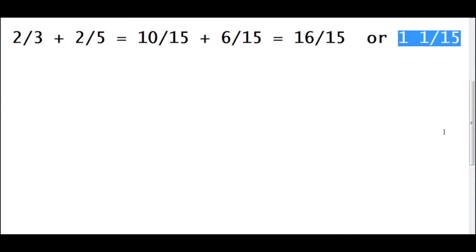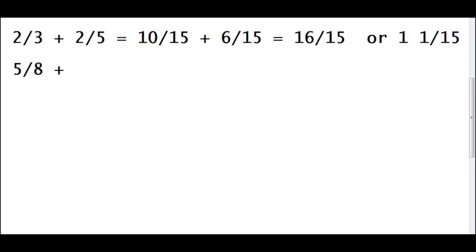So 1 and 1 over 15 is your final answer. Now let's move on to something a bit more difficult: 5 over 8 plus 7 over 12 plus 3 over 4. We have 3 fractions here with different denominators.